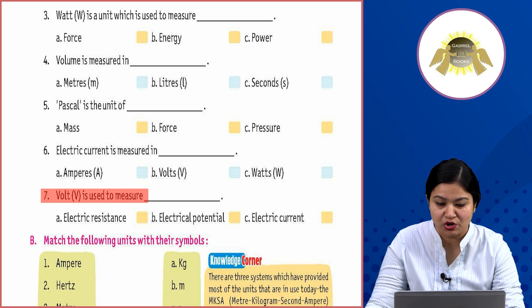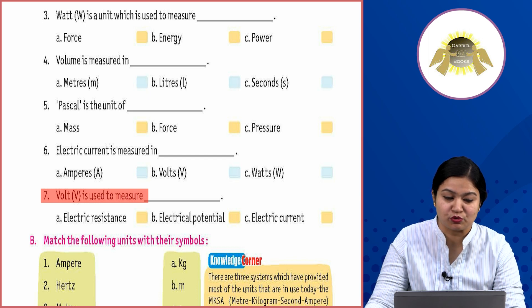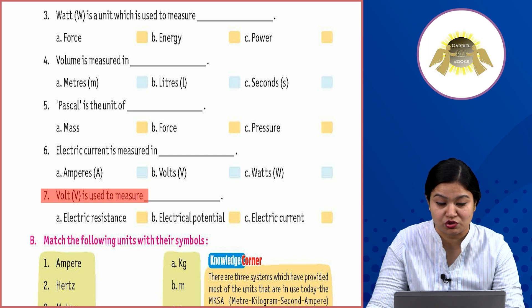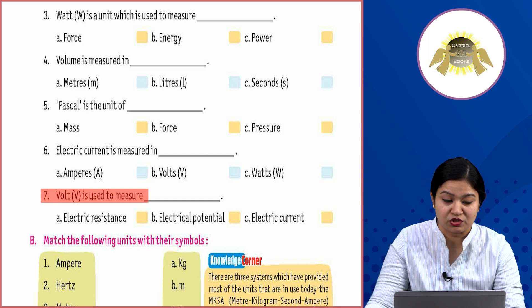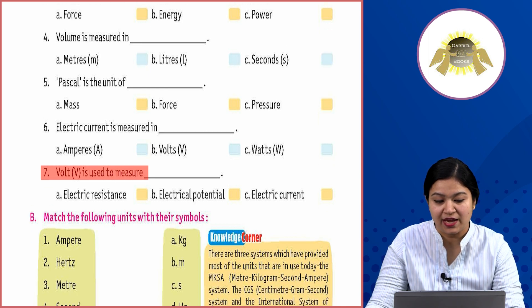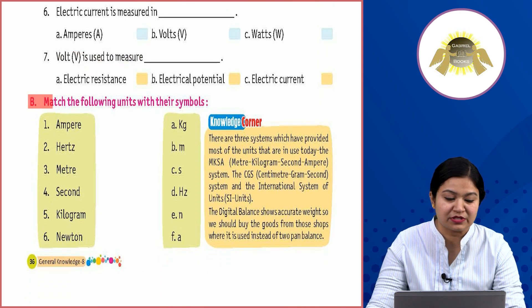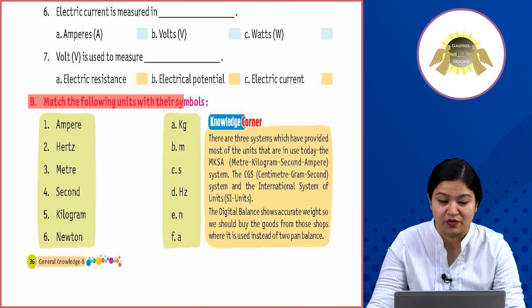Seventh: Volt (V) is used to measure — option A: electric resistance, option B: electrical potential, option C: electric current. Volt ko hum kis cheez ko measure karne ke liye use karte hain — the correct answer is option B, electrical potential.